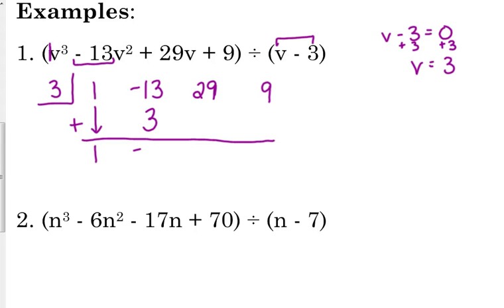And then we're going to add. Negative 13 plus 3 is negative 10. Then we're going to repeat the process. Number below the line, multiply by the number on the shelf. Negative 30. Put it in the next open space. And we're going to add. 29 plus negative 30 is negative 1. I'm going to repeat it again. Negative 1, the number under the line, times the number on the shelf. Negative 3. It goes in the last open space there. And we're going to add. 9 plus negative 3 is 6. That last number is the remainder.